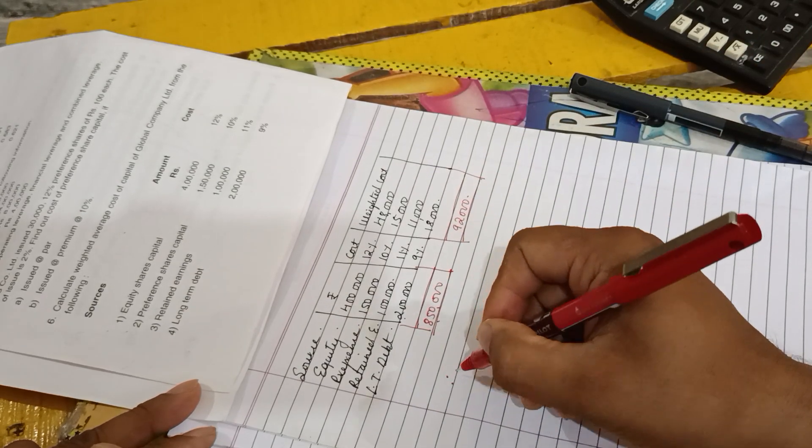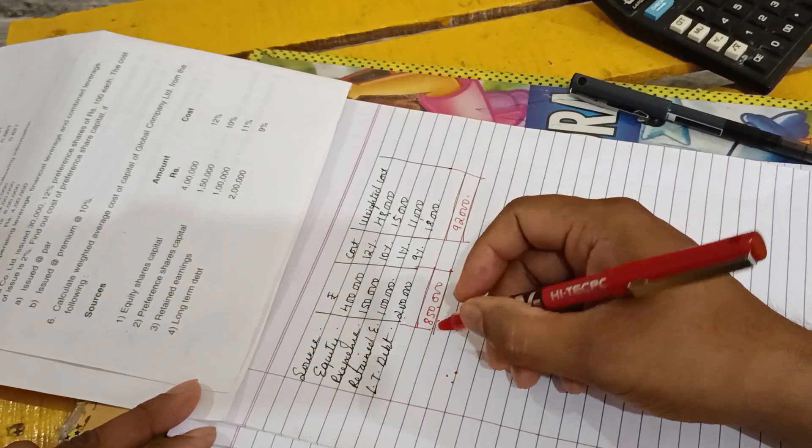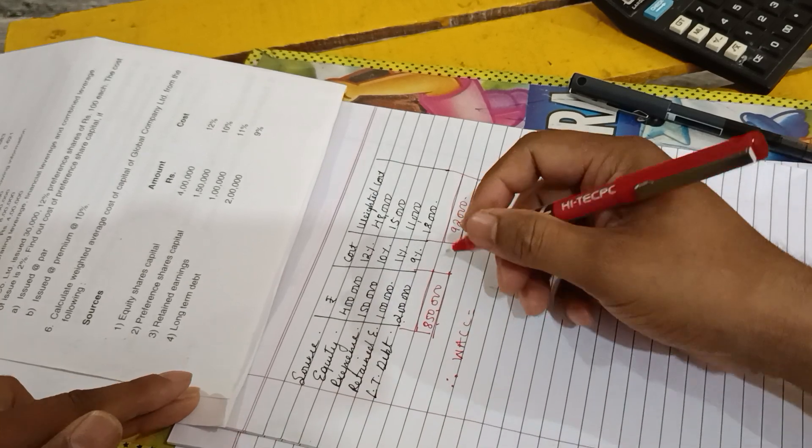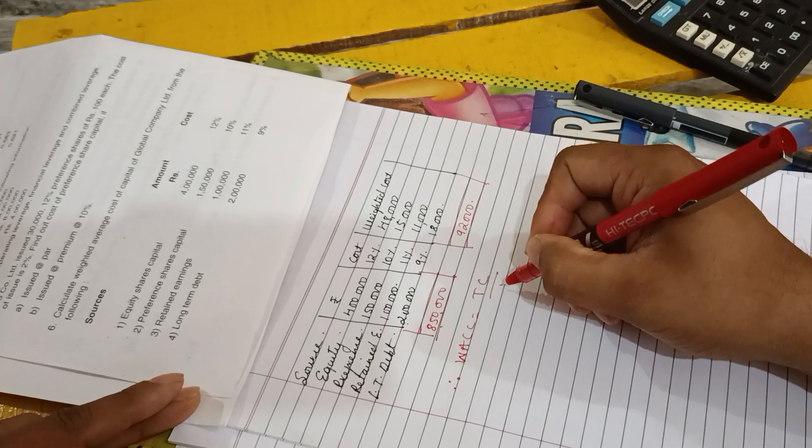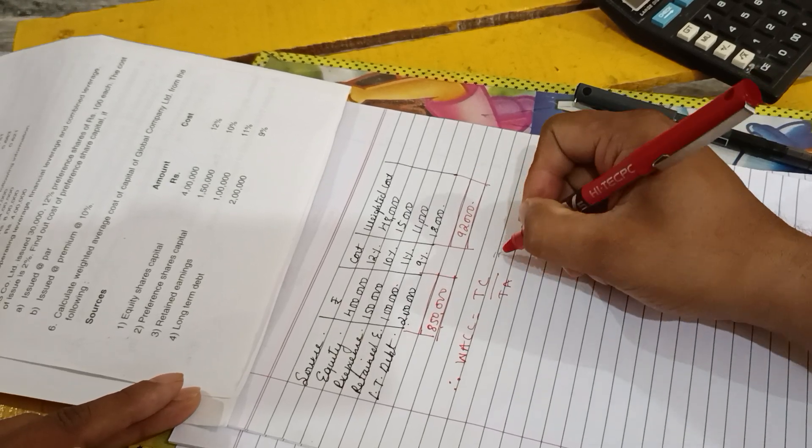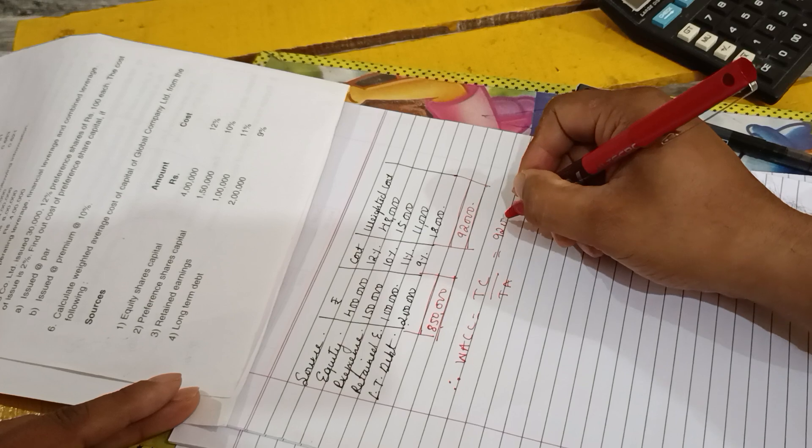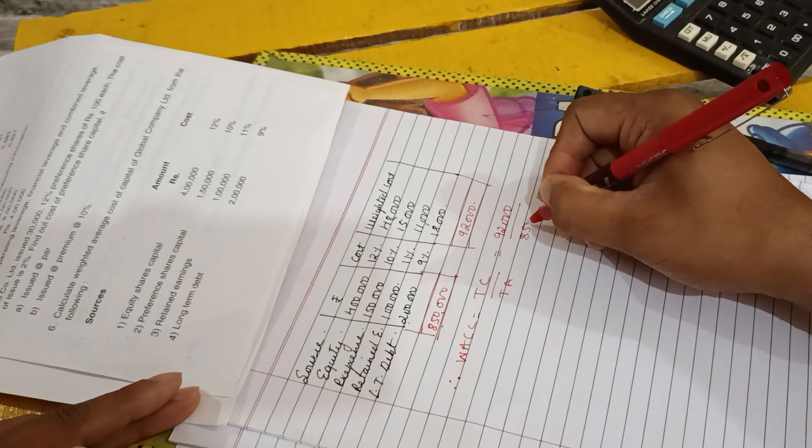Therefore, the last step: the formula WACC is equal to total cost divided by total amount. Total cost here is ninety-two thousand, total amount is eight lakh fifty.